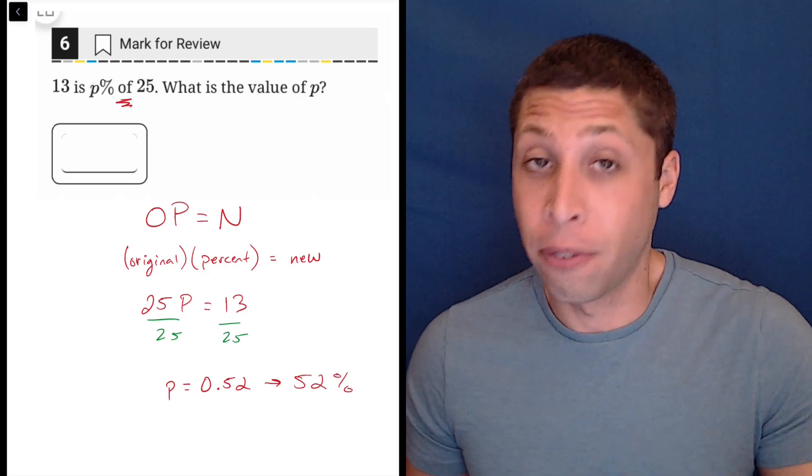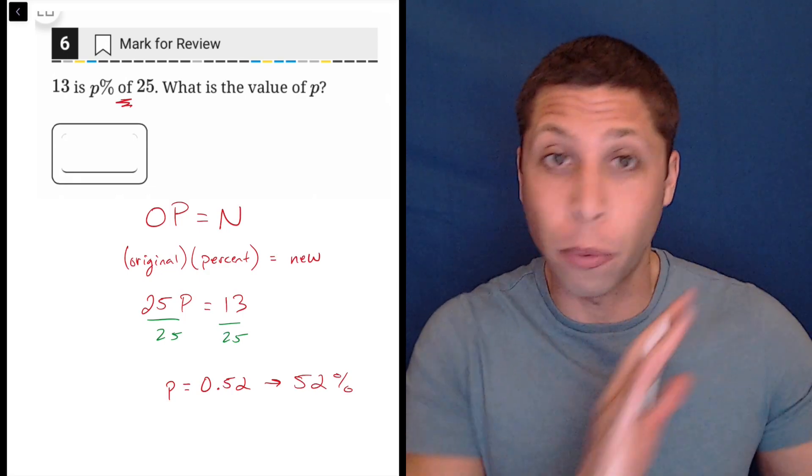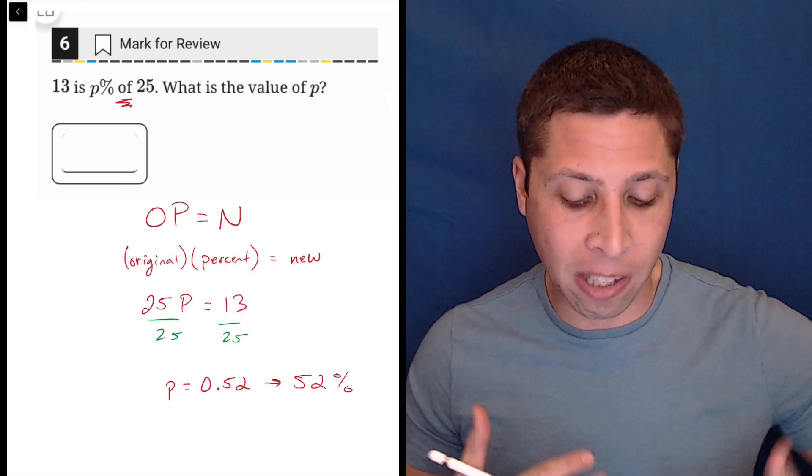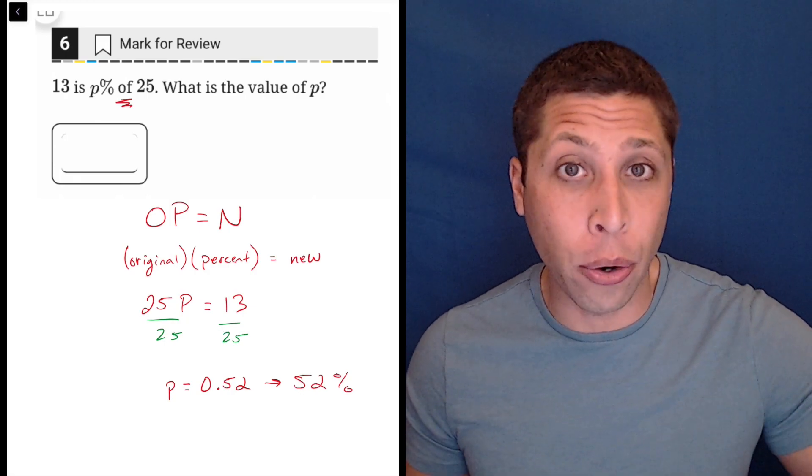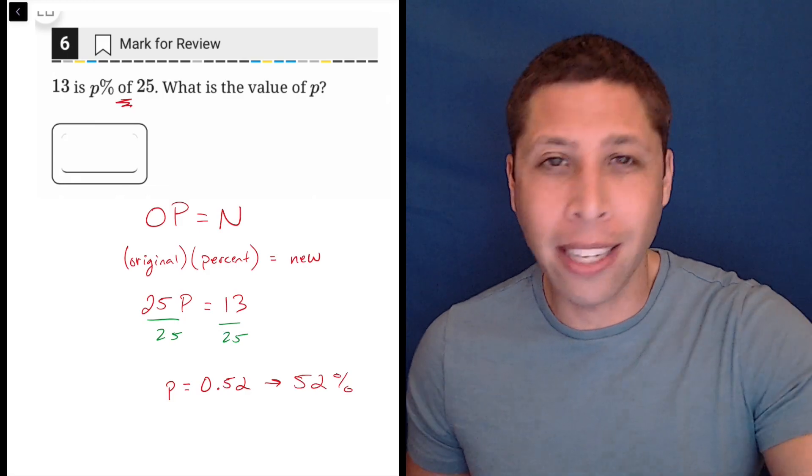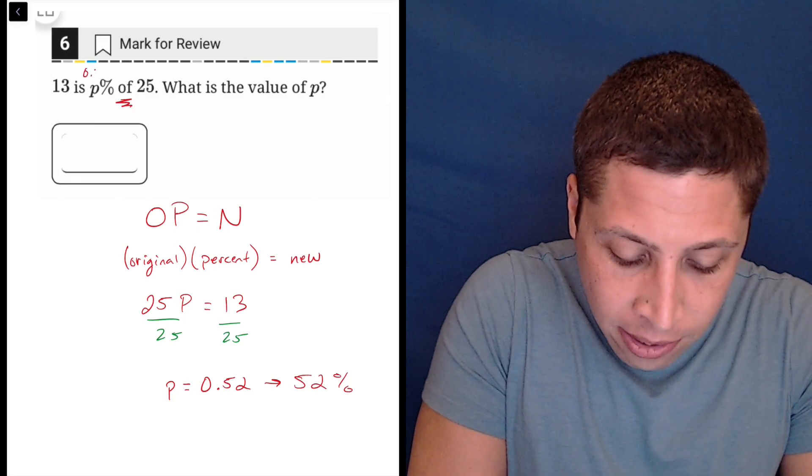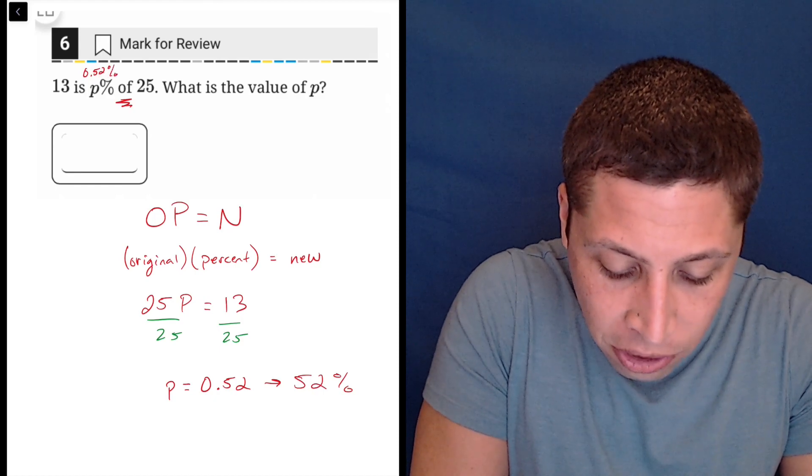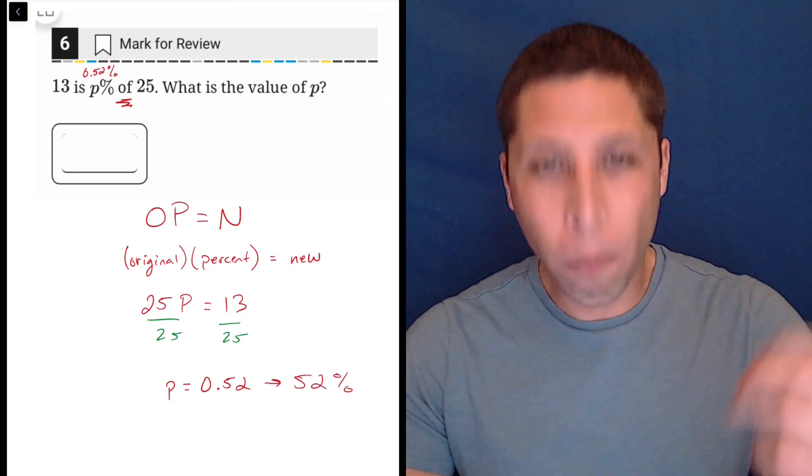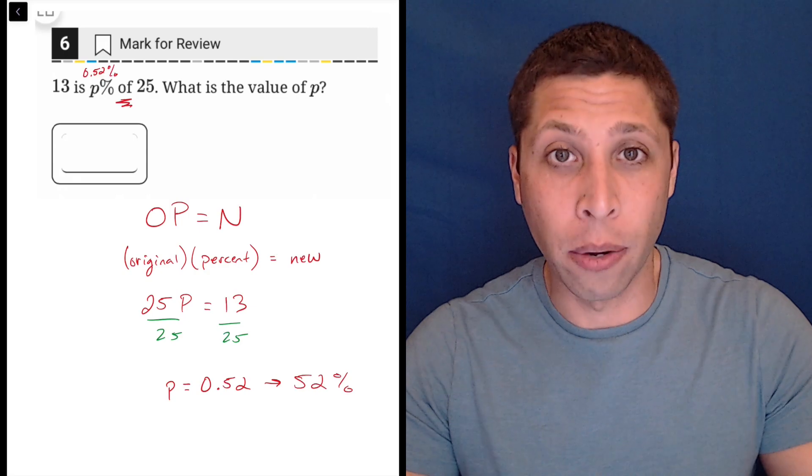Sometimes they do ask for the decimal version because of the story or whatever, but here they want it as a percentage. And you can test it out by plugging the number that you solved back into the question and seeing if it makes sense. If I've said 13 is 0.52 percent of 25, hopefully that would just sound crazy to you.